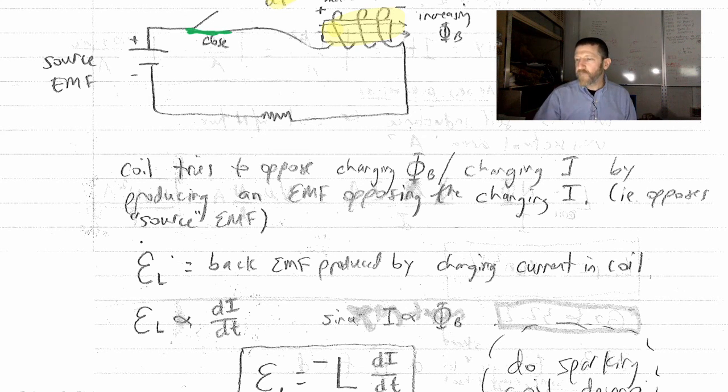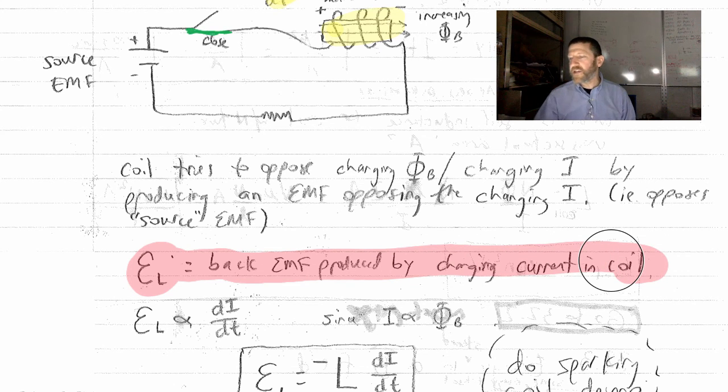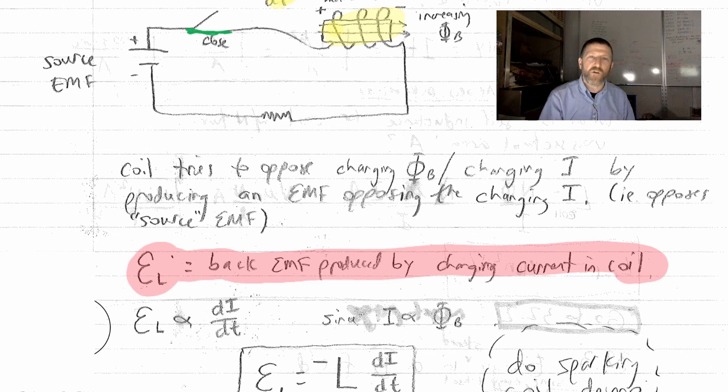The symbol for that back EMF is this thing right here. EL. It's a curly E. It's an EMF. That little L is the symbol for an inductor. It's a back EMF, E sub L, produced by a changing current in the coil.